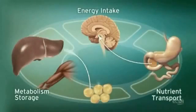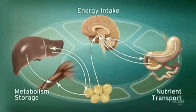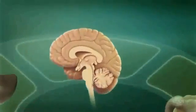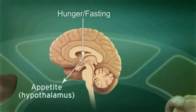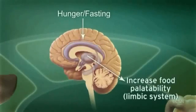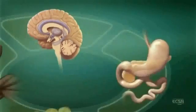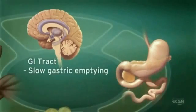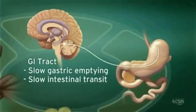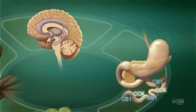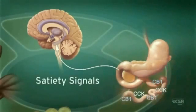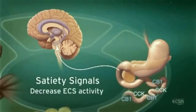Endocannabinoid system activity in the central nervous system regulates food intake. For example, ECS stimulation by hunger and fasting signals stimulates appetite and increases the palatability of food. Endocannabinoids slow gastric emptying and GI transit and appear to stimulate secretion of ghrelin, a neuropeptide that increases appetite and food intake. After eating, cholecystokinin in the duodenum triggers satiety signals, subsequently decreasing ECS activity through suppression of CB1 expression.